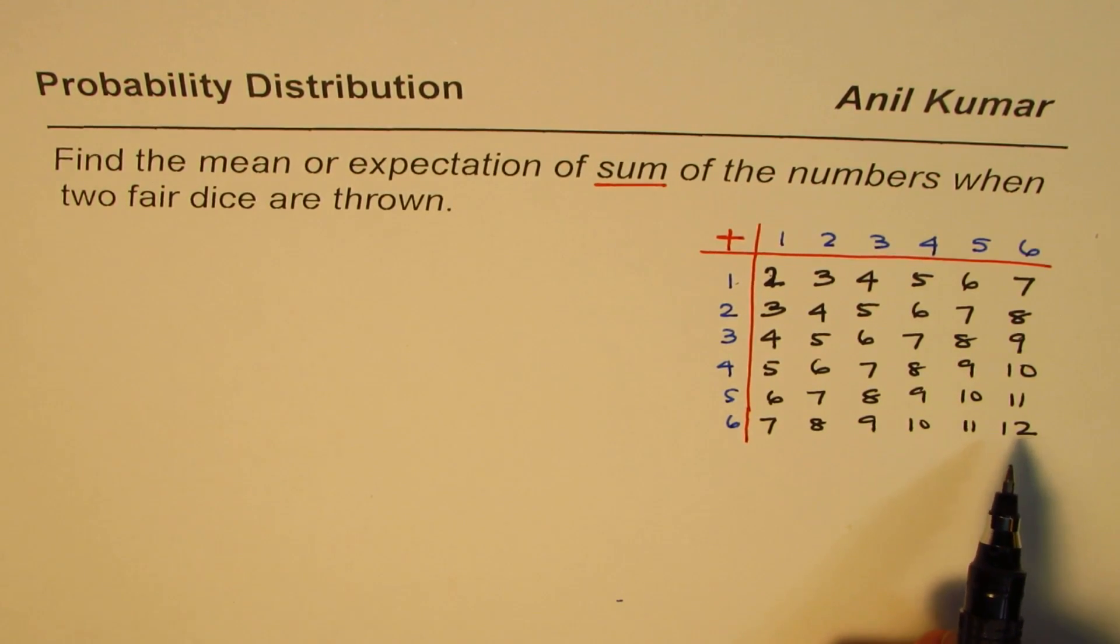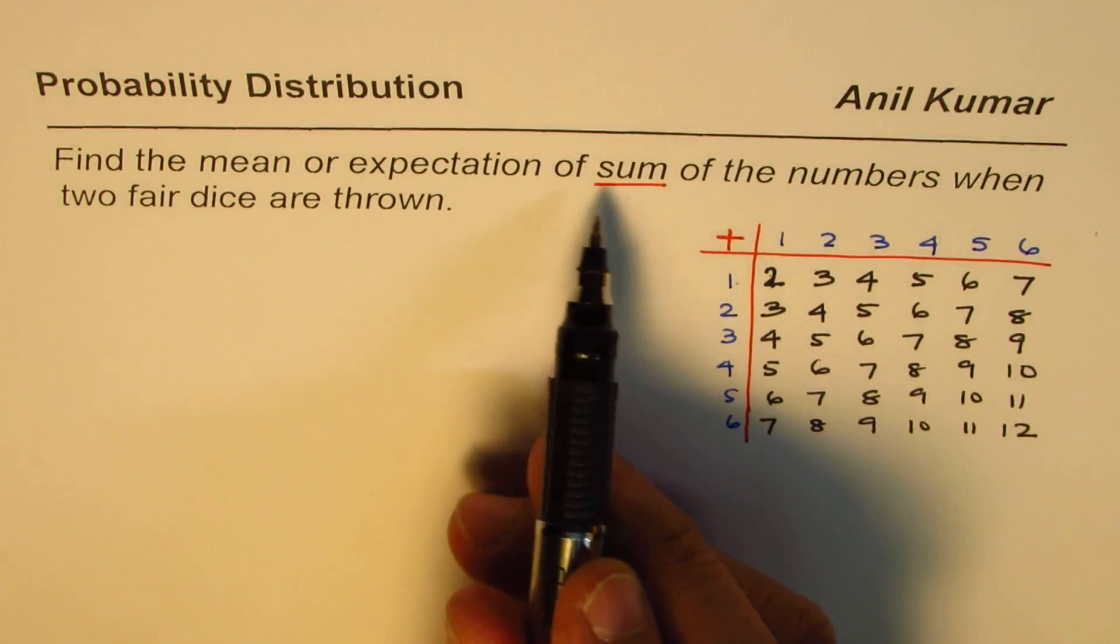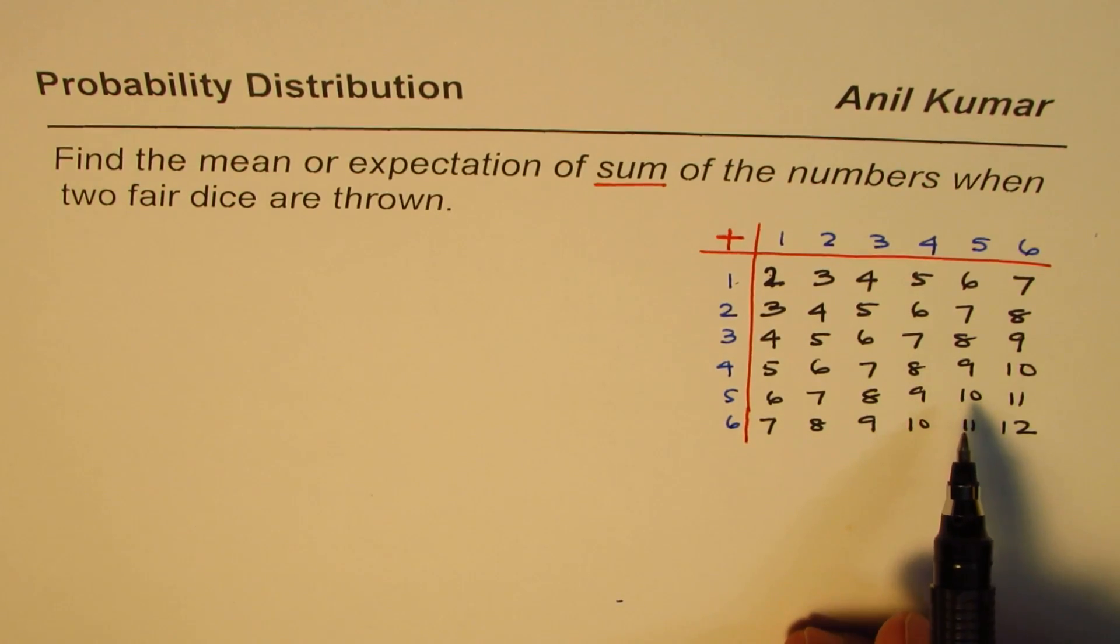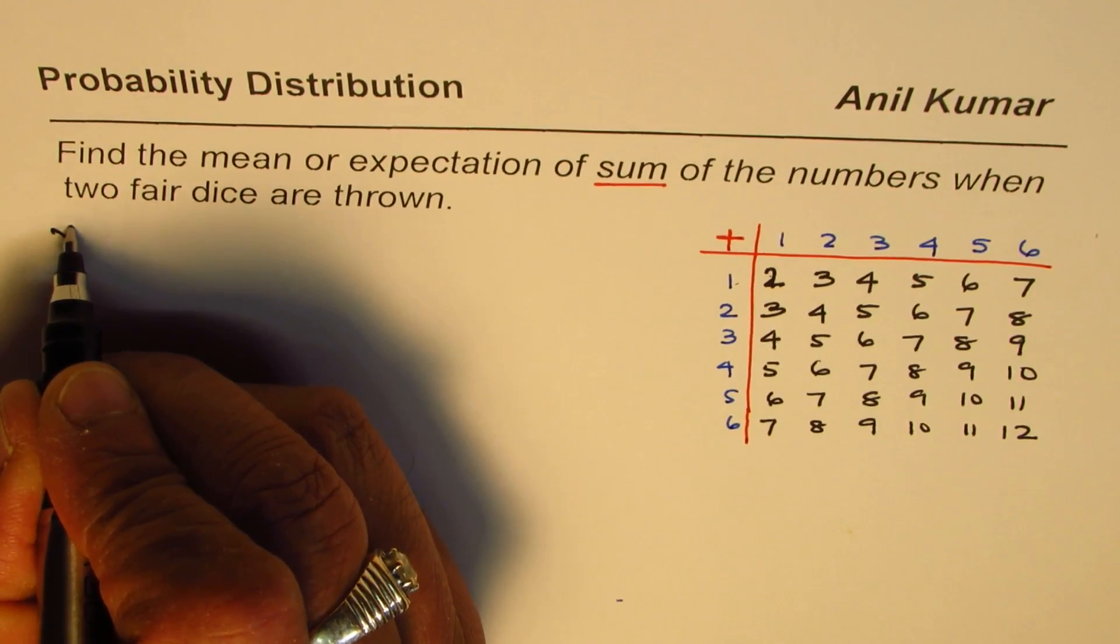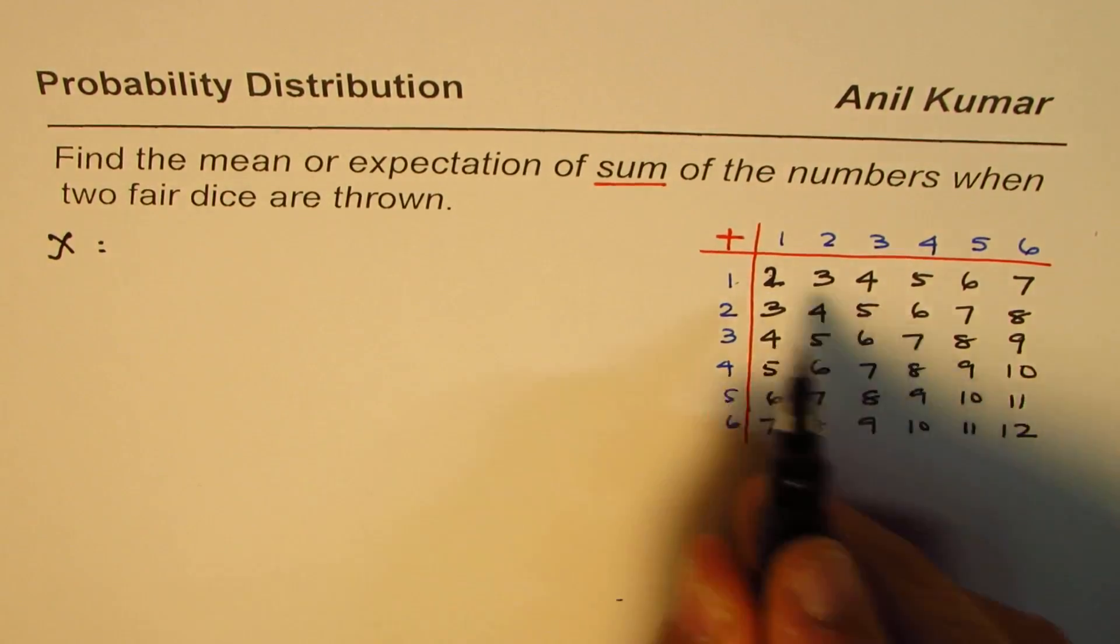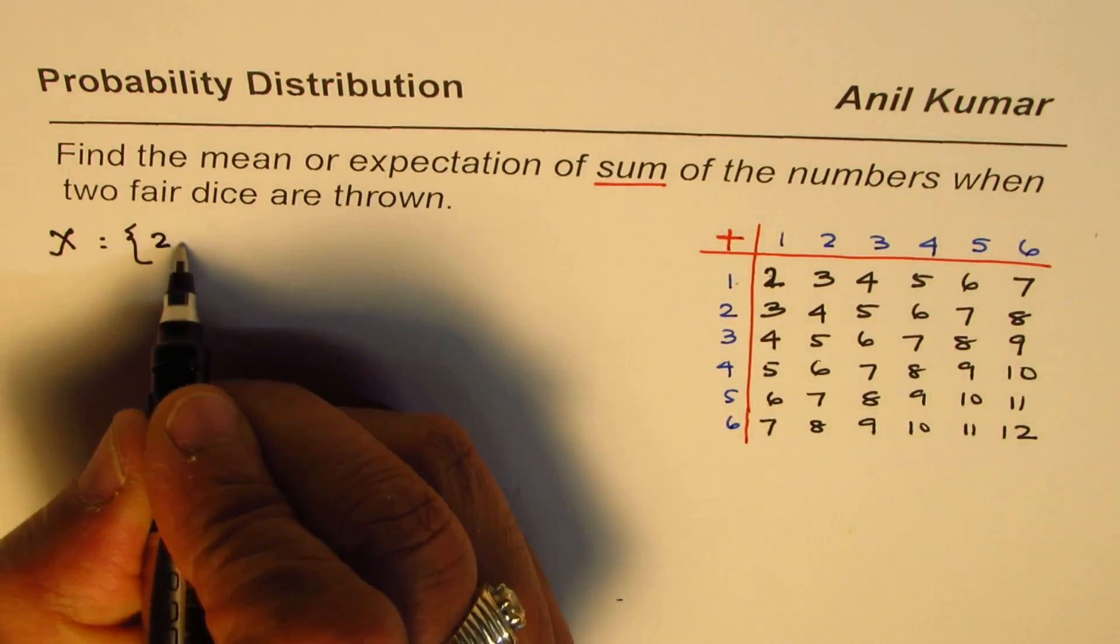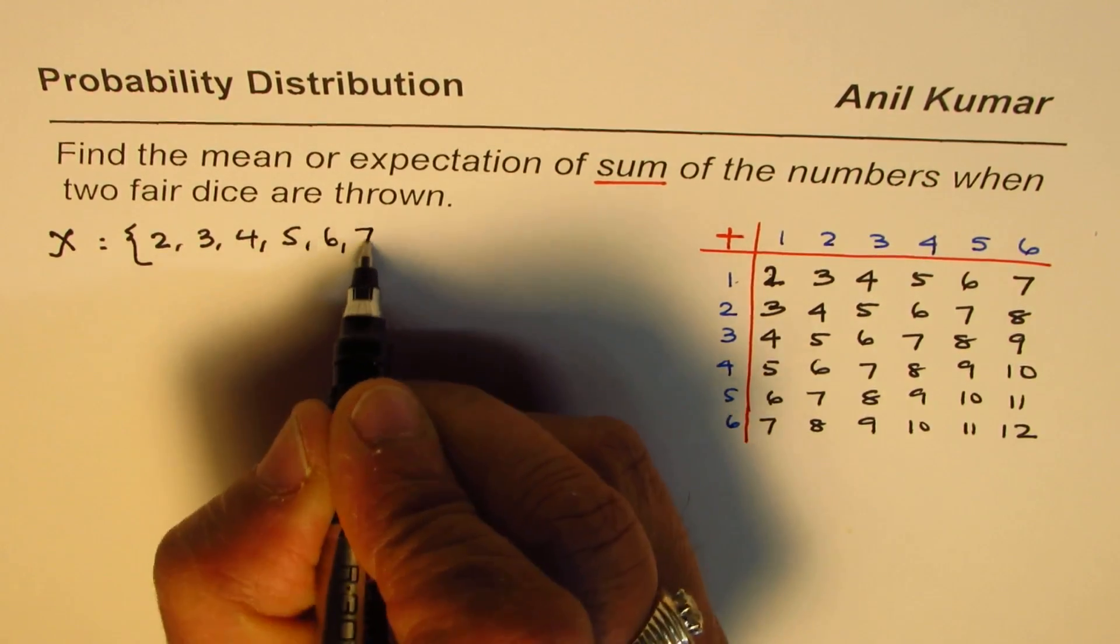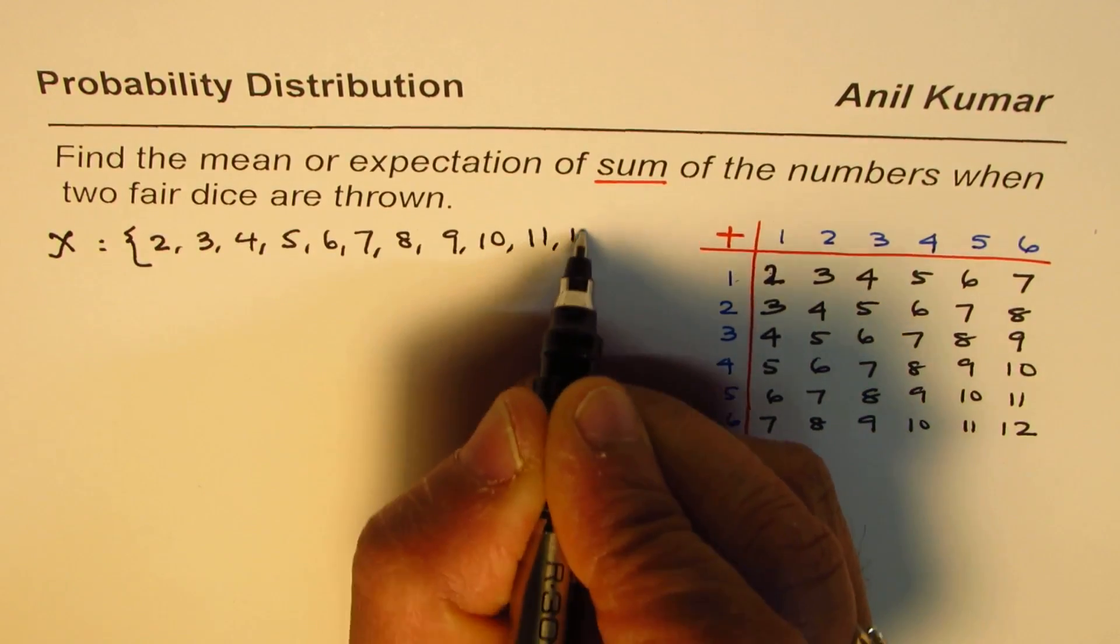Now, what we want to find is the mean or expectation of the sum of numbers when two fair dice are thrown. Let x be the random variable which could have these possible values from 2 to 12: So 2, 3, 4, 5, 6, 7, 8, 9, 10, 11, 12.